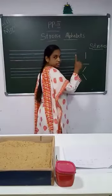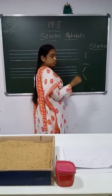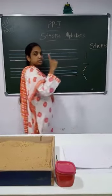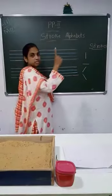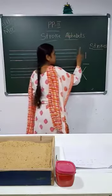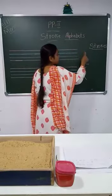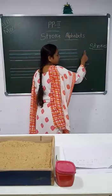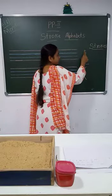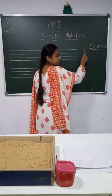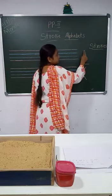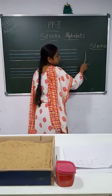Take out your index finger, children. Which is your index finger? This is your index finger. Now keep your finger on the top and draw the line straight — you are going to trace on the standing line.